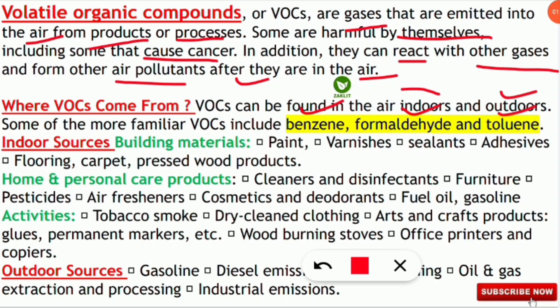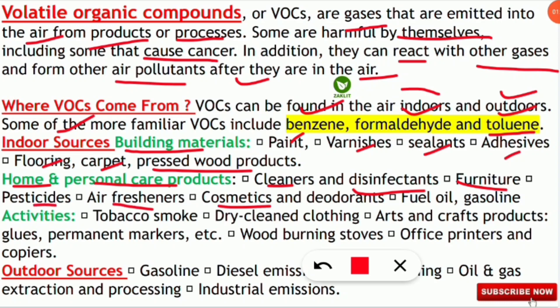Indoor sources of VOCs include building materials such as paints, varnishes, sealants, adhesives, flooring, carpet, and pressed wood products. Home and personal care products also release VOCs: cleaners and disinfectants, furniture, pesticides, air fresheners, cosmetics and deodorants, and fuel oil and gasoline are all indoor sources releasing VOCs into the atmosphere.